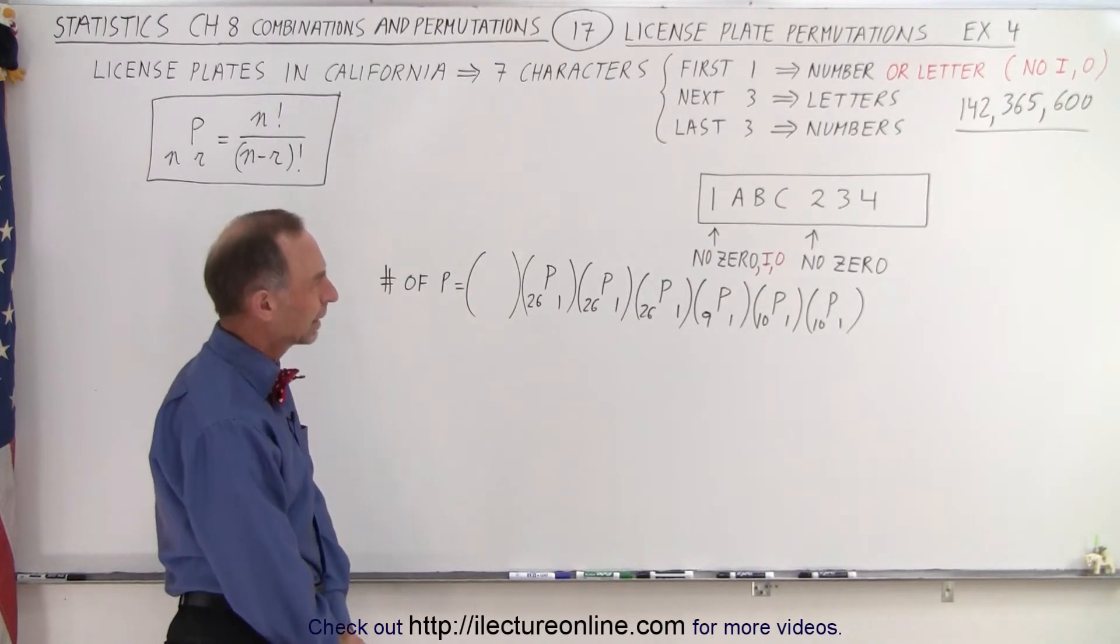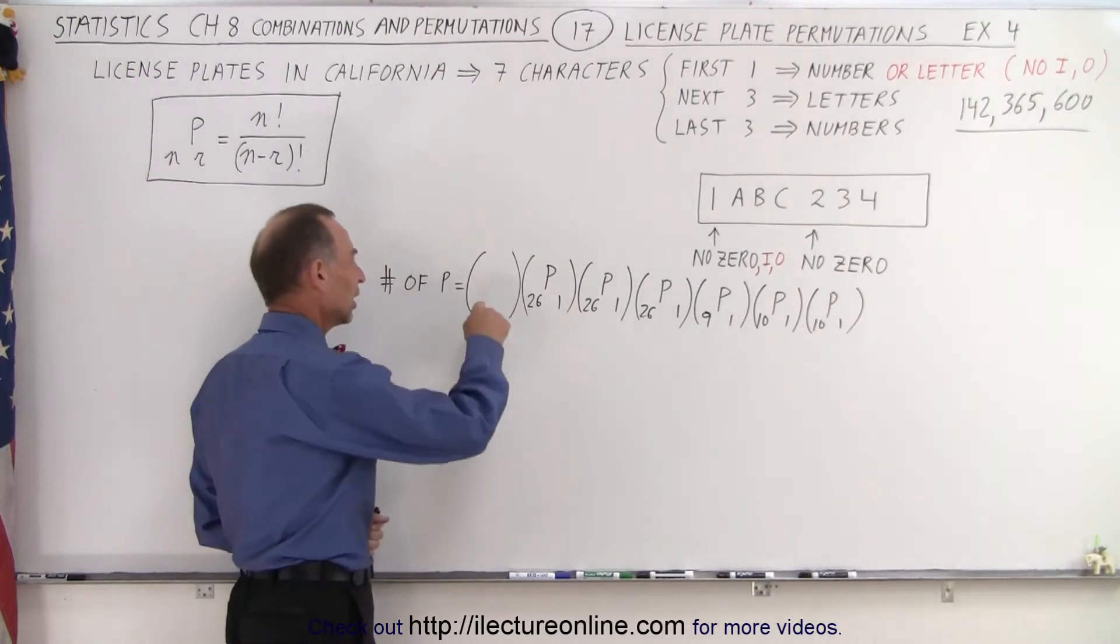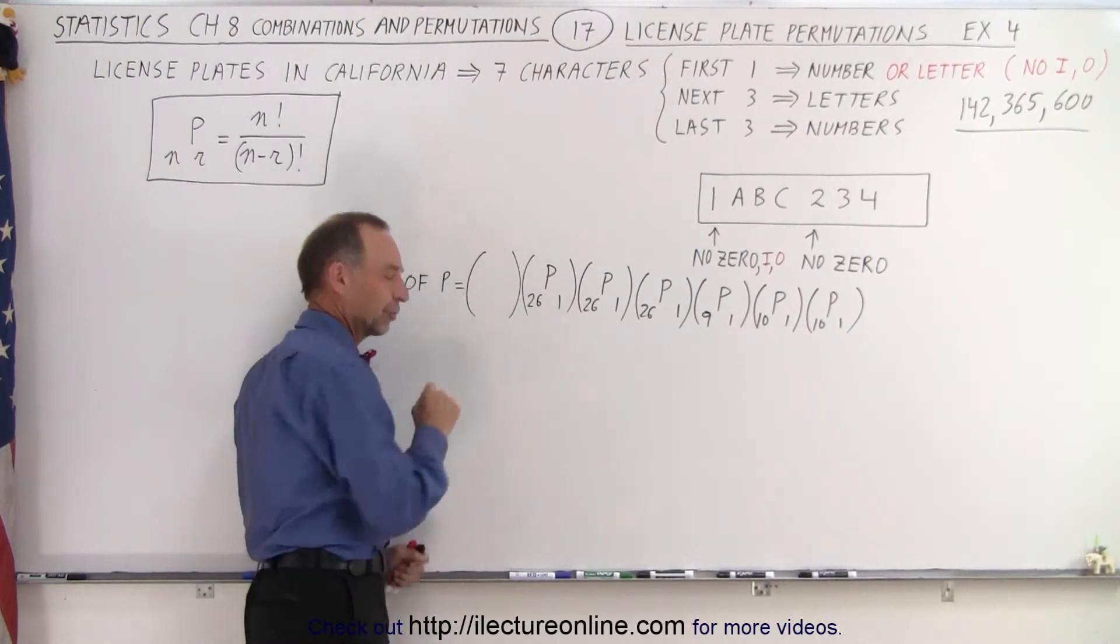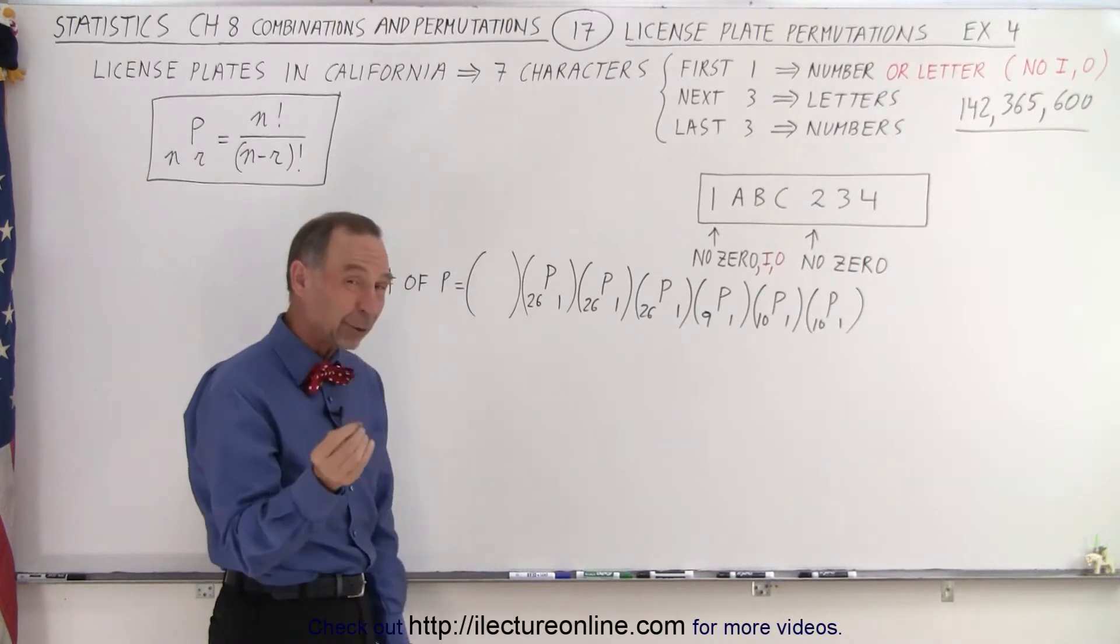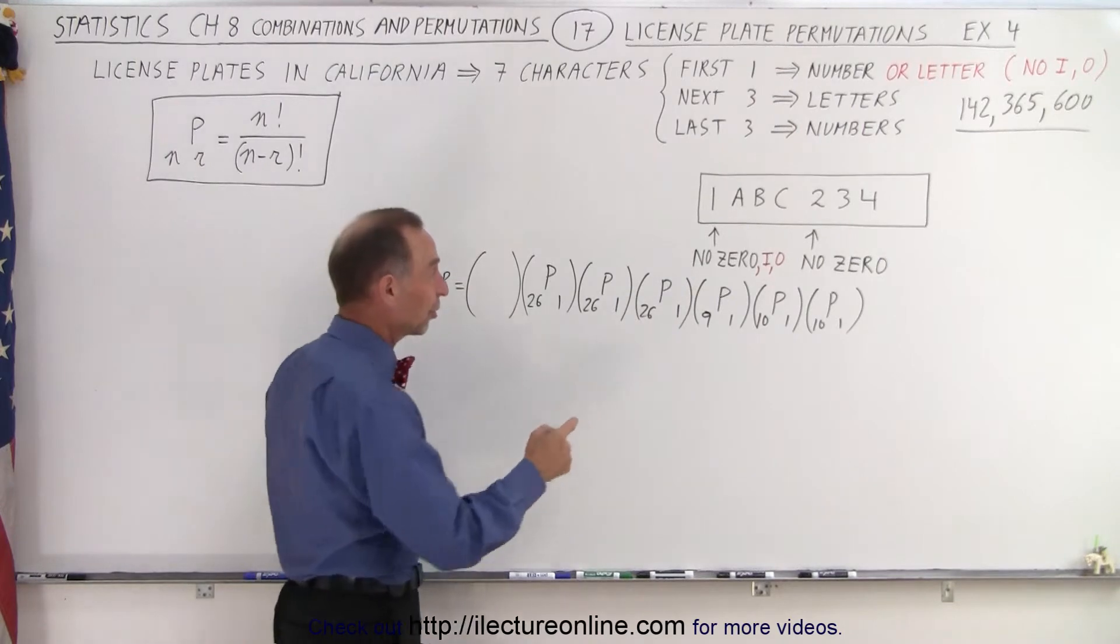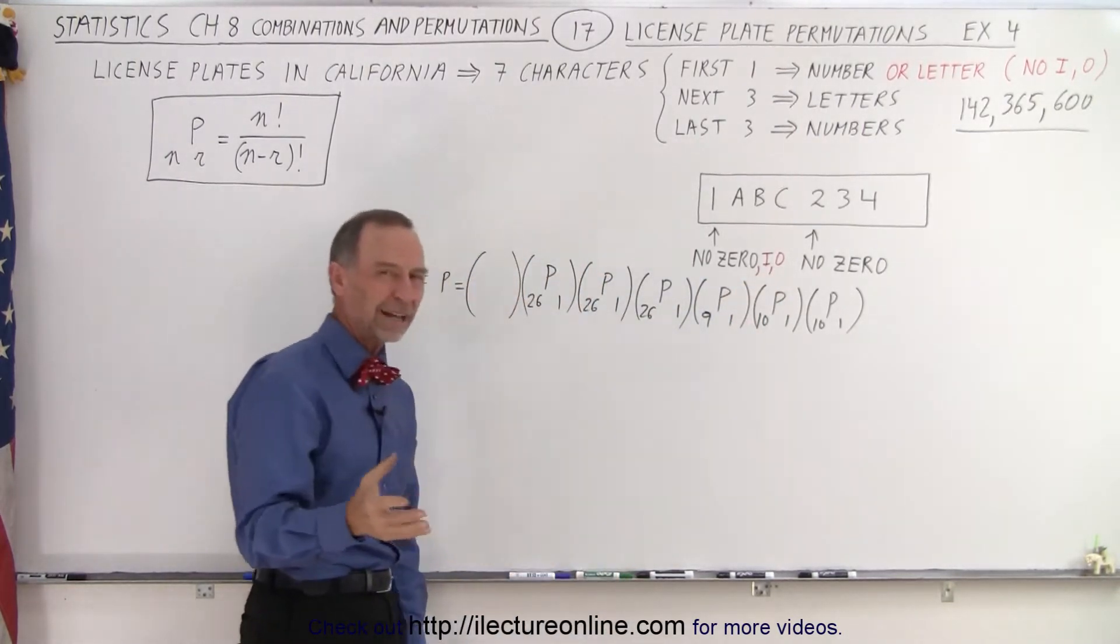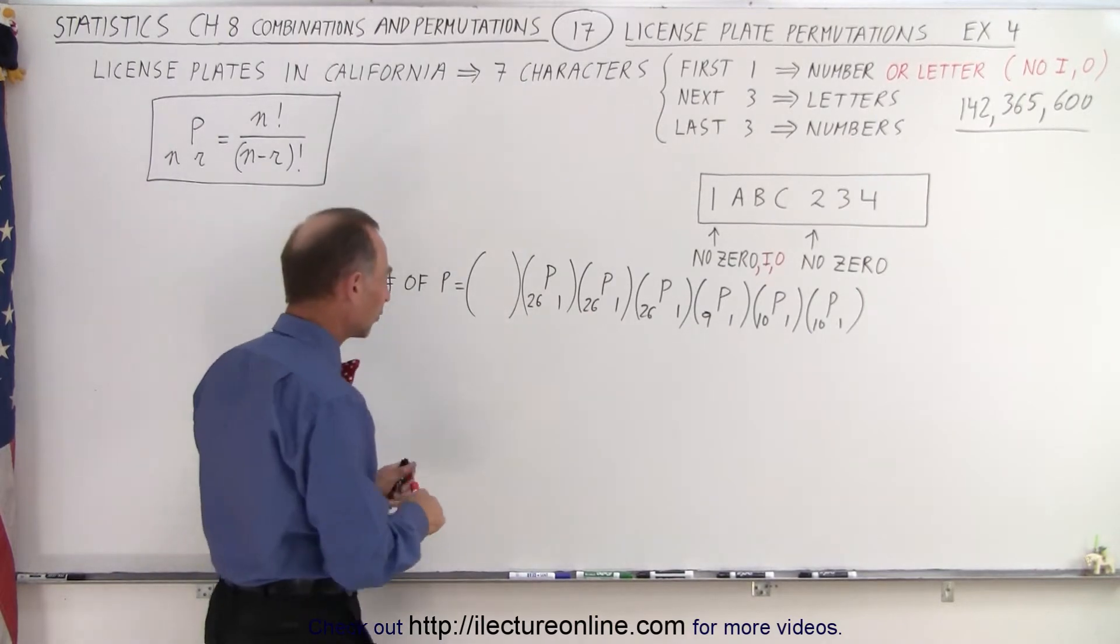Now, how do we make that change? Well, the only thing that has to change is the number of permutations for the first character. So it could be a letter or a number. There's 26 letters, 10 numbers, that would be 36, but a zero was not allowed, an I is not allowed, and an O is not allowed. So we subtract 3 from 36, that gives us 33.